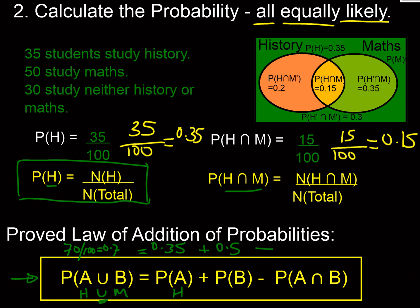But we have to correct for those students who've been double counted, which is the probability of doing history and maths. We said there were 15 students in that, and the probability was 0.15. So on the left hand side, probability of doing history or maths was 0.7, and we can calculate that using this formula: adding 0.35 to 0.5, take away 0.15, which also gives us 0.7.